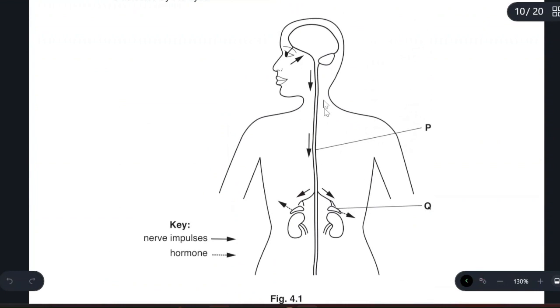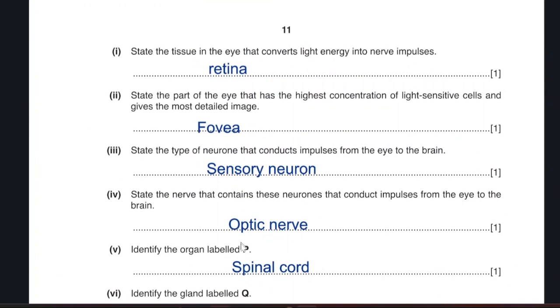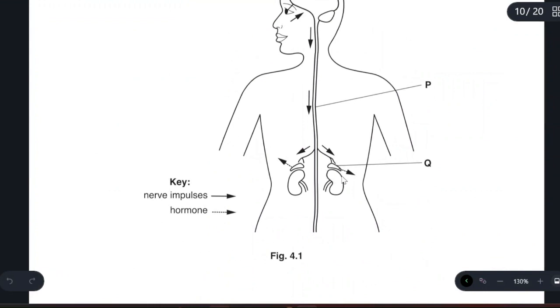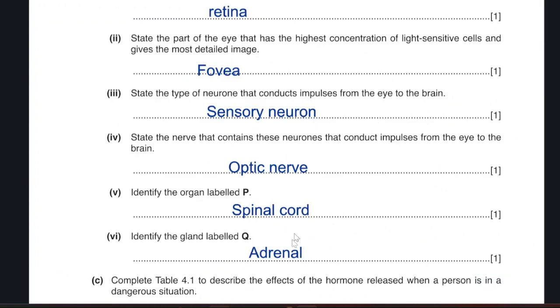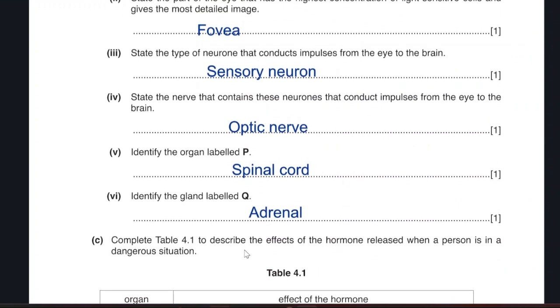What is the organ labeled P? Extension from going downwards from the brain. This is the spinal cord. What is the gland named Q? It is the adrenal gland that secretes adrenalin. Complete the table. Describe the effects of hormones when a person is in a dangerous situation.